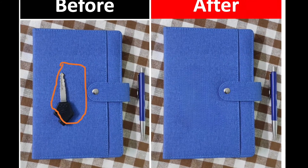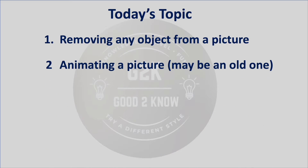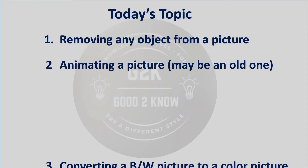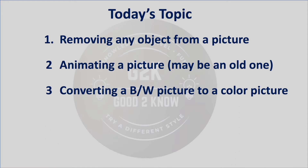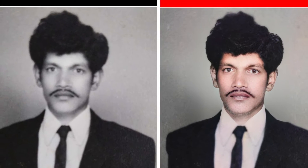This is an example of how to remove something from a picture. The second one is using a picture to create animation — maybe one of your old pictures. I had an old picture of my dad which I used to animate. The third one is converting a black and white picture into a color picture, which actually takes a lot of time if you use Photoshop or other tools.